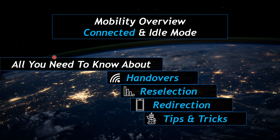In the last session we covered idle mode mobility, but to understand the overall mobility strategy we need to know both connected mode and idle mode. Today we will cover the connected mode mobility strategy and how connected mode and idle mode mobilities work together. We will go through handovers (connected mode mobility), reselections (idle mode mobility), and redirections, along with examples and tips for devising a good mobility strategy.